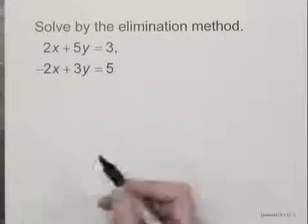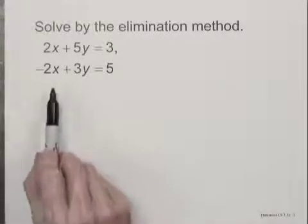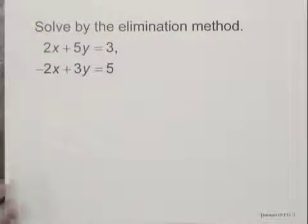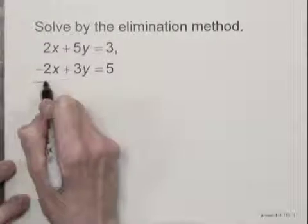Now, I can add these two equations, and in doing so, the x terms will add to 0. So we can eliminate the x term, the variable x.